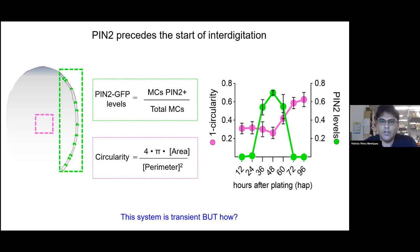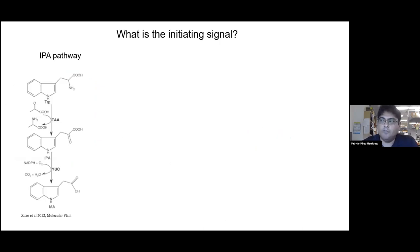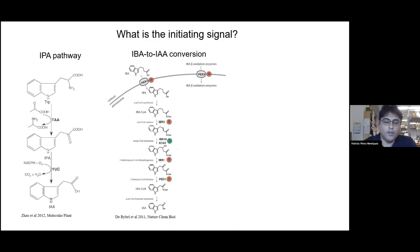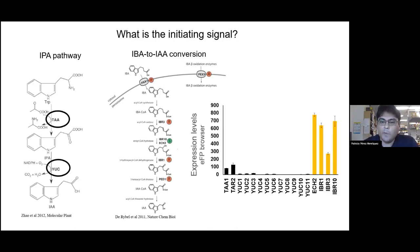This system is transient, but we wanted to understand what the initiating and determining signals are for this PIN2-based auxin transfer system. Because of the self-organizing nature of auxin, we thought auxin must be the initiating signal. We analyzed different auxin synthesis pathways, and the expression of genes involved in the main two pathways shows a clear preference for the IBA-to-IAA conversion at these developmental stages.